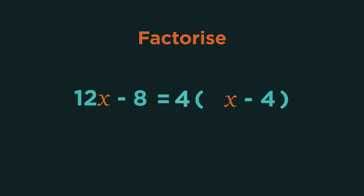So take the 4 outside of the bracket as that's the highest factor. Then what do we need to multiply 4 by to get 12x? 3x, so 3x inside the bracket. And what do we need to multiply 4 by to get negative 8? Negative 2, so that also goes inside the bracket. This is the factorized expression.